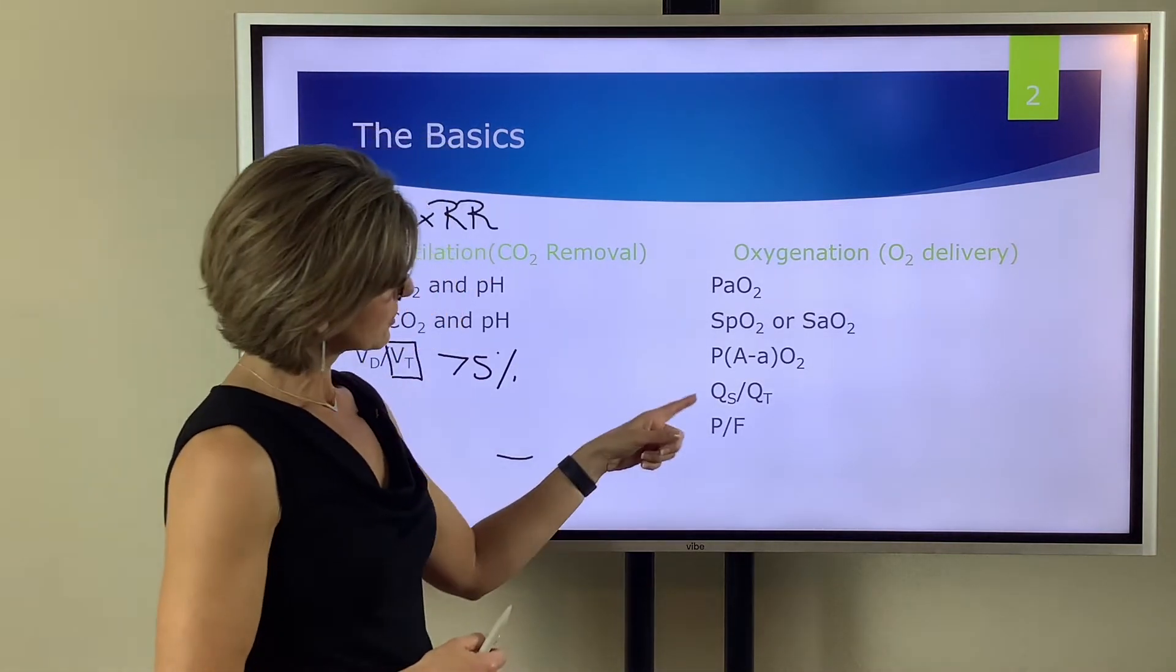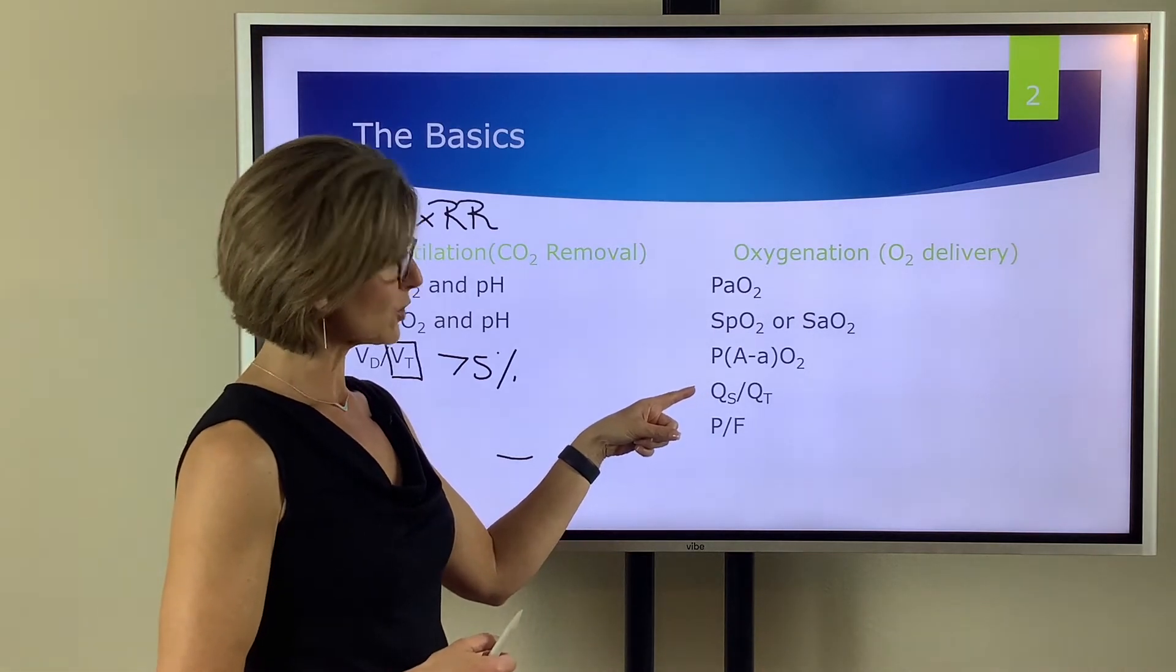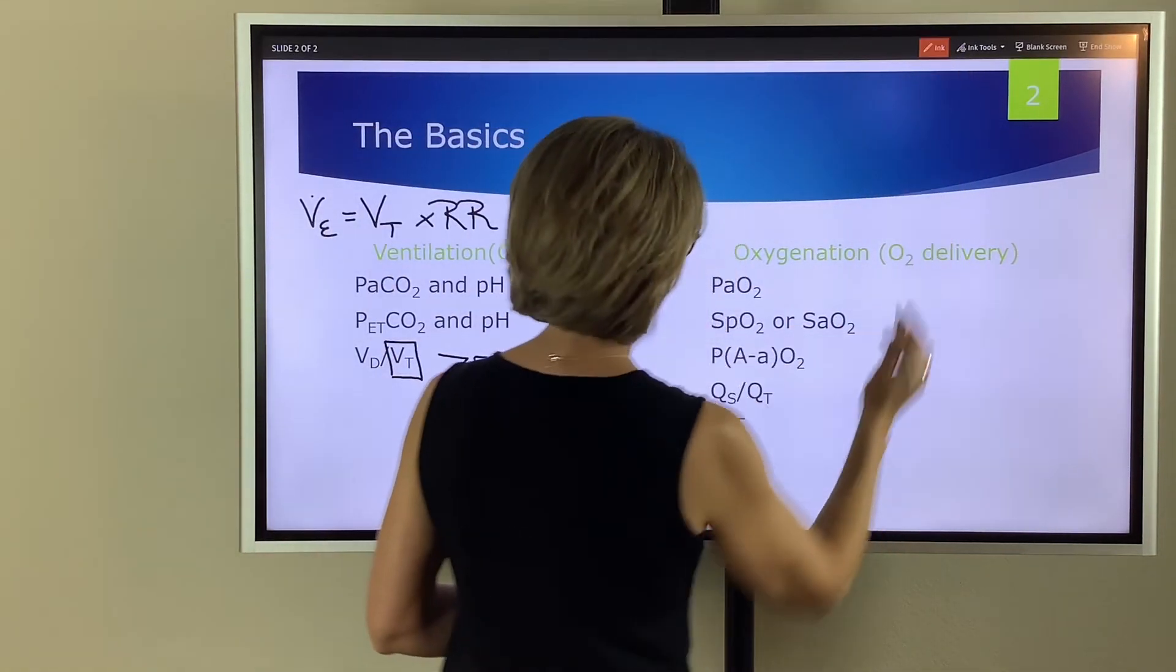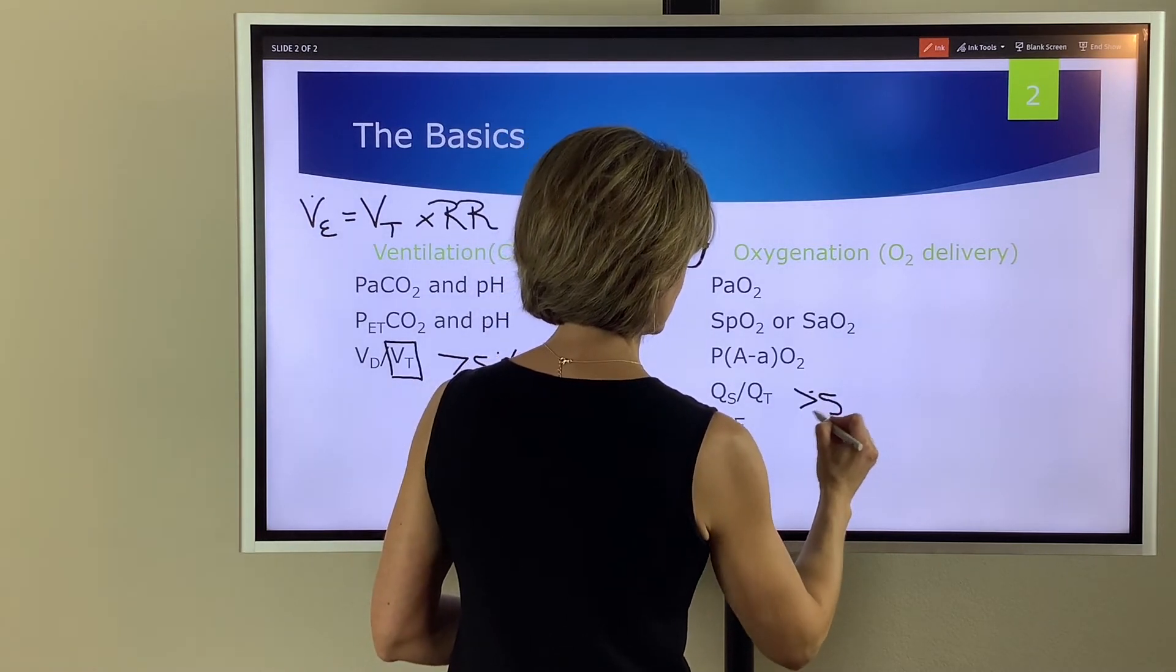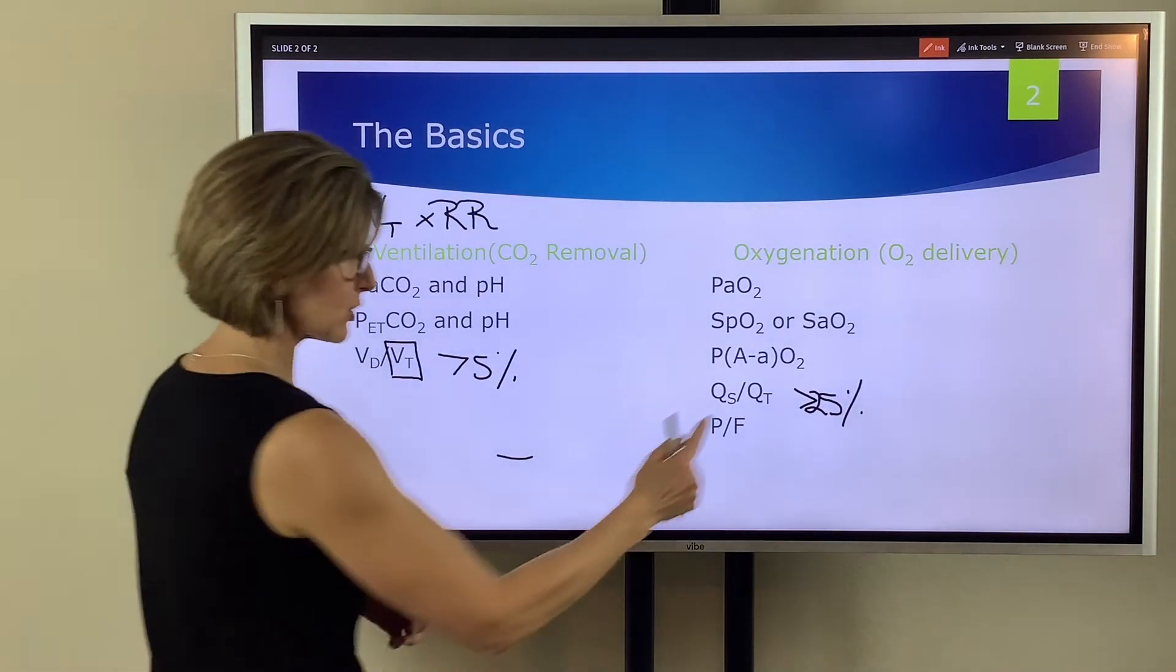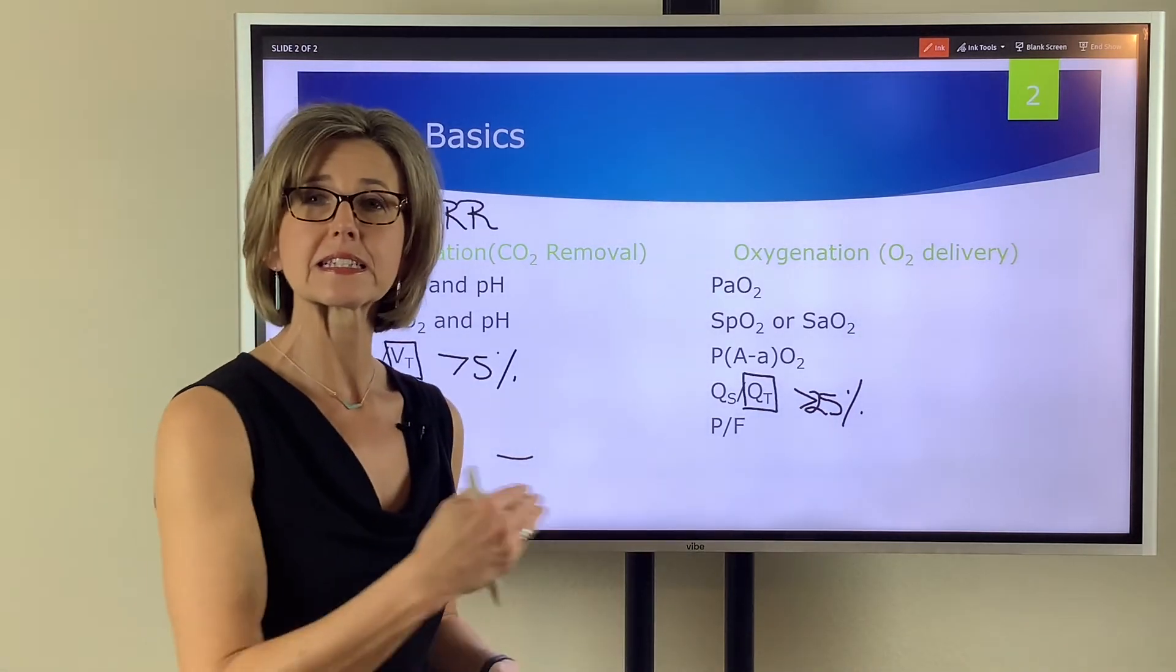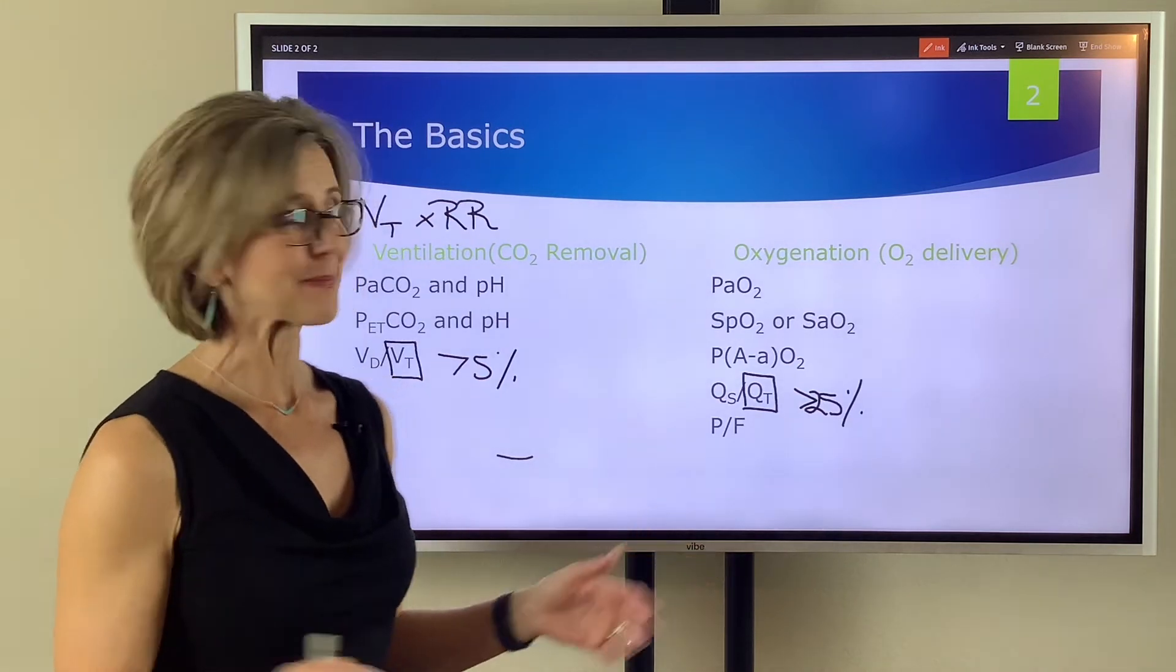Then we come down to physiologic shunt QS to QT. All right again this formula when you do the math is going to come out as a percentage. So let's say if a person had 25% what that means is 25% of the cardiac output is unoxygenated and that's a bad thing to happen.